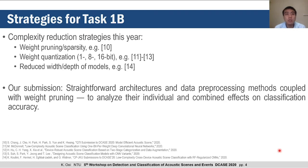Submissions to Task 1B this year also used a variety of complexity reduction strategies. These strategies can chiefly be classified into weight pruning, weight quantization, as well as model depth and width reduction strategies. For our submission, we made use of straightforward architectures and data pre-processing methods coupled with weight pruning, in order to analyze their individual and combined effects on classification accuracy.